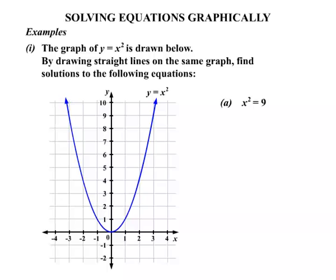The first equation to solve is x squared equals 9. Because we've been given the graph of y equals x squared, we're going to isolate the x squared in our equation — it already is in this case. So we're thinking about the line y equals x squared, and on the other side, 9, we're going to consider the line y equals 9. We draw that in on the diagram — it's a horizontal line cutting the y-axis at 9.